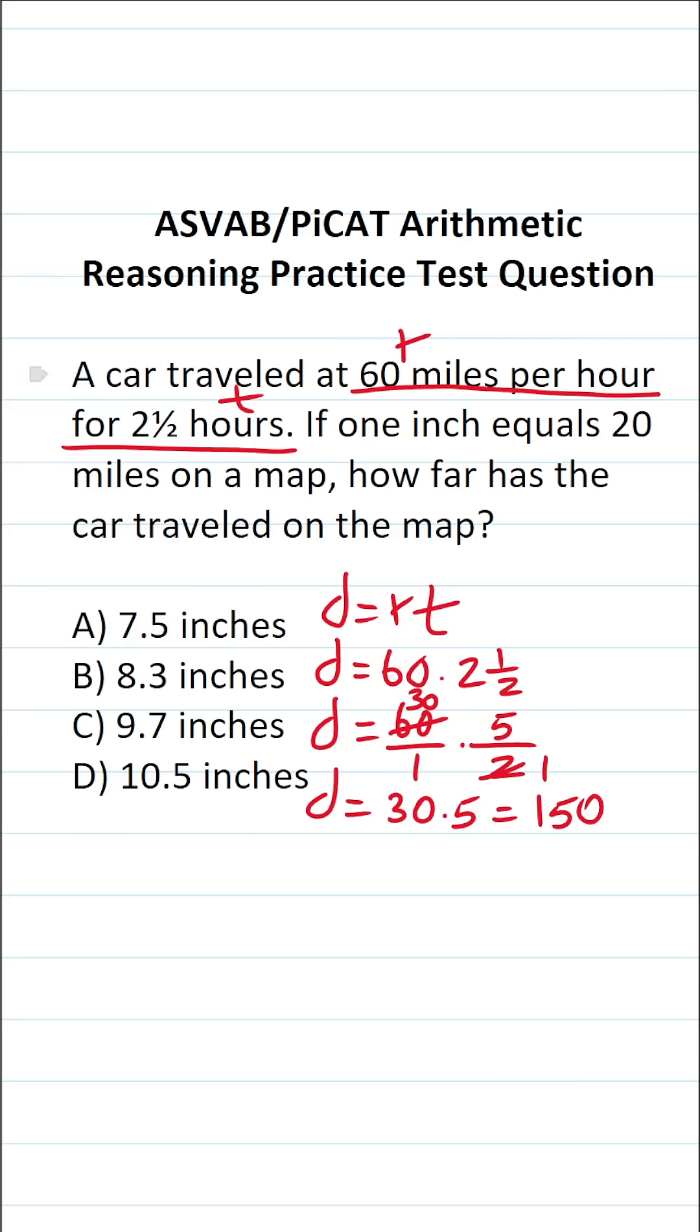We use the distance formula to determine that the car traveled the distance of 150 miles. Now we're going to use a proportion to solve the second part of this problem. One inch corresponds to 20 miles on the map. That's equal to the inches on the map, which is unknown. I'm going to call it X over the 150 miles that the car traveled.